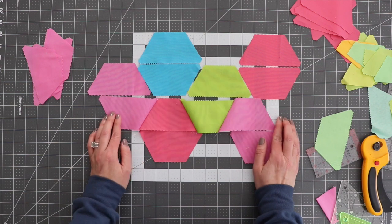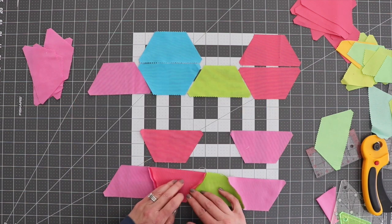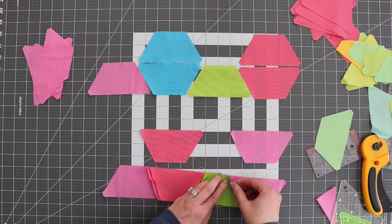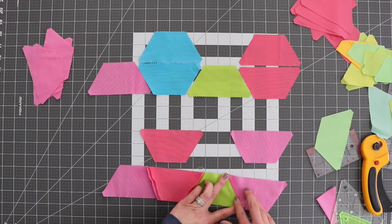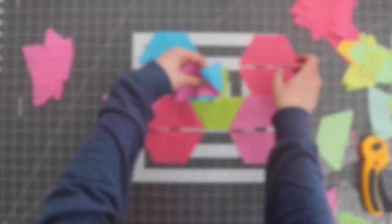All right, I've got my first row sewn here and you can see that I've got them in the right order, so when I sew these other rows they should line up pretty nicely. And then to press these, I'm just going to actually press them open. You could press them to one side, just make sure that you have them in the right direction so that they nest when you sew the rows together. Now I'm going to get this next row sewn together.